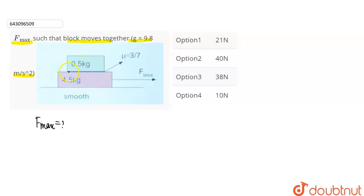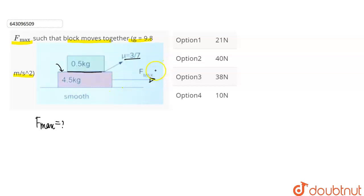These are two blocks. Where the two blocks are in contact, we have the coefficient of friction given. This surface has a coefficient of friction value of 3 by 7. It means that between the two blocks there is a friction force. We have the heavier mass of 4.5 kg, and the maximum force is applied in this direction so that these two blocks move together, and there is no relative motion.